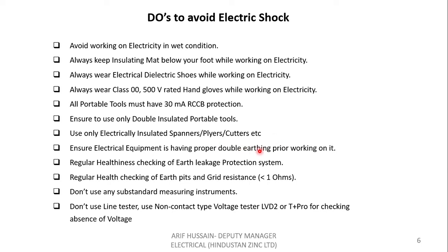We should have regular health checking of the earth leakage protection system, so that in case of earth leakage or fault, it will trip and protect the human body. We should have regular health checking of earth pits and maintain a grid resistance of less than 1 ohm, so that fault current passes through the earth rather than through the human body. We should not use any substandard measuring equipment or line testers — we should use only non-contact type voltage testers like the LBD2 from Fluke or the D+ Pro, also from Fluke.